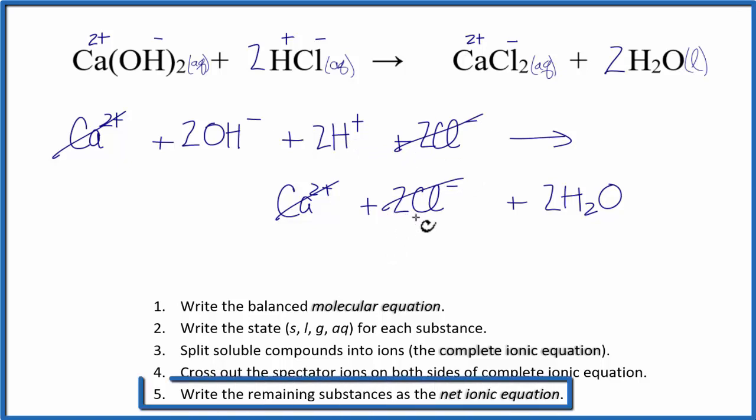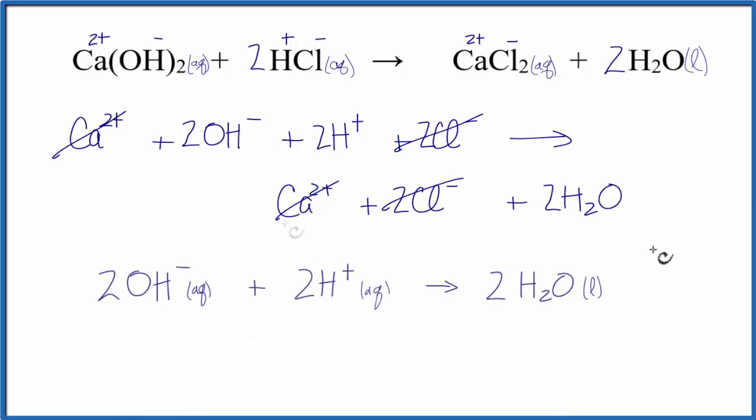So now I can rewrite this as the net ionic equation. That'd look like this. We do need to do one last thing, though. Since we have a 2 in front of everything, we can just get rid of those, essentially reducing it down to a 1 to 1 to 1 ratio. So this is probably the better way to write the net ionic equation for Ca(OH)₂ plus HCl.